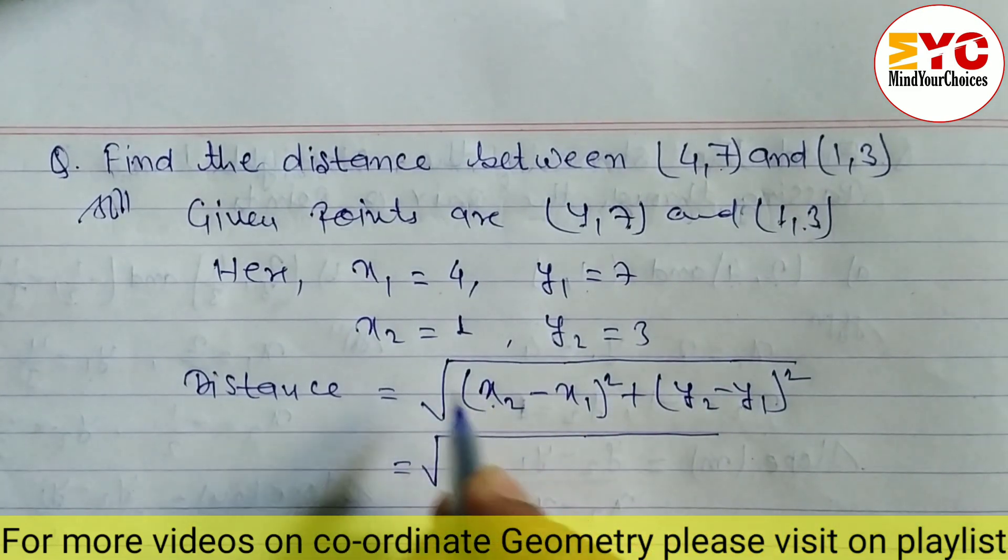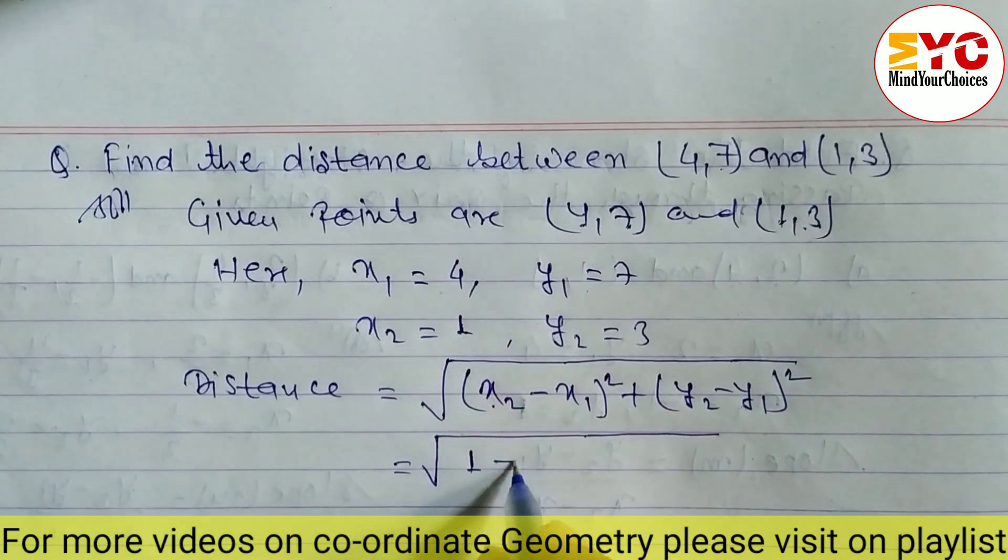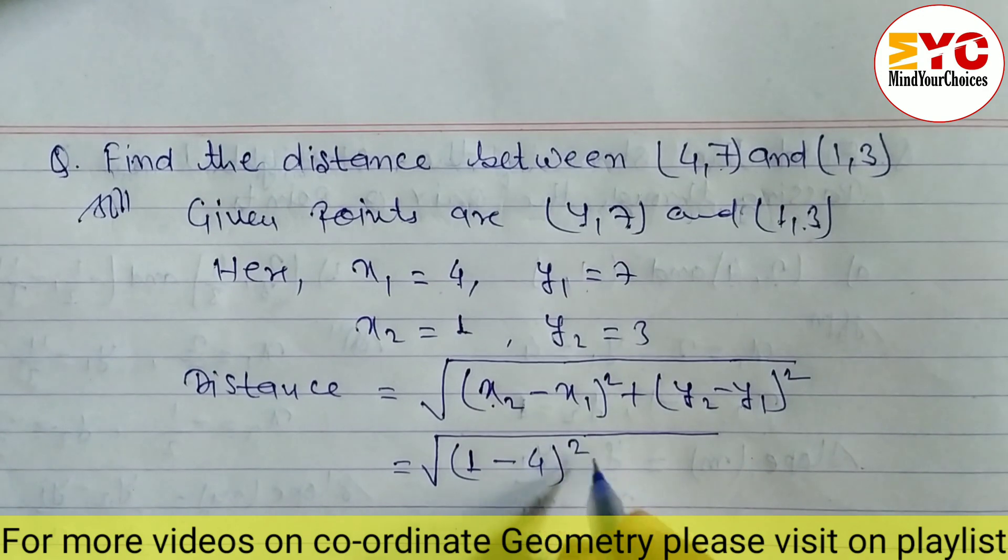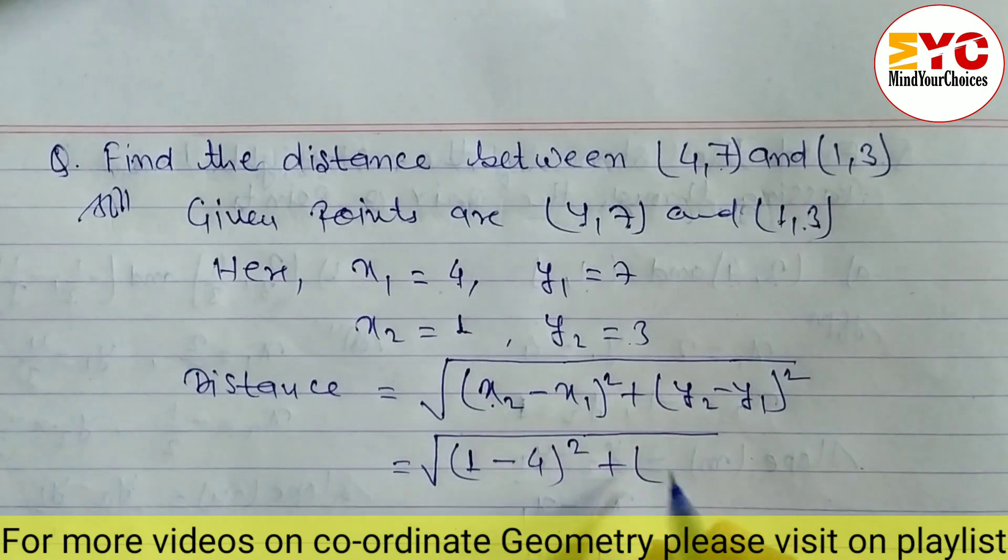x2 equals 1, so we write (1 - 4)². y2 is 3, so we write (3 - 7)². The formula becomes: square root of [(1 - 4)² + (3 - 7)²].